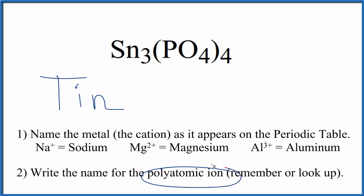Next, we'll write the name for the polyatomic ion. So here we have the phosphate ion, PO4. You either memorize that PO4 is the phosphate ion, or if you're allowed, you look it up. So far we have the name tin phosphate for Sn3(PO4)4.